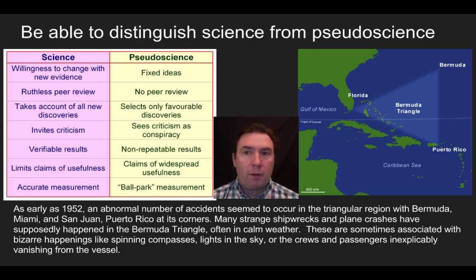Ruthless peer review versus no peer review. Has there any been any review of this material? Well, based off what I've given you, the answer is no. I haven't shown you any review. There have been reviews. And then the question will be, well, what does that review say about the Bermuda Triangle? Takes account all new discoveries versus selects only favorable discoveries. Here, we've been very selective. Many strange shipwrecks and plane crashes. You'll notice that many, so using this anecdotal data is probably going to be a good hint that it is a pseudoscientific claim.